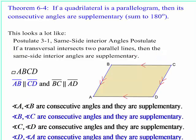Next theorem. Theorem 6-4. If a quadrilateral is a parallelogram, then its consecutive angles are supplementary, which I already alluded to in this conversation, that it looks an awful lot like postulate 3-1, the same side interior angles. If a transversal intersects two parallel lines, then the same side interior angles are supplementary, and that's what's happening here.